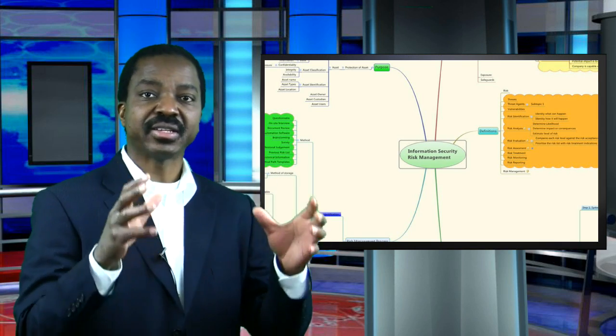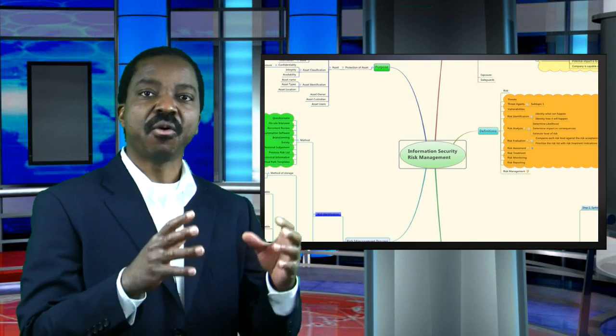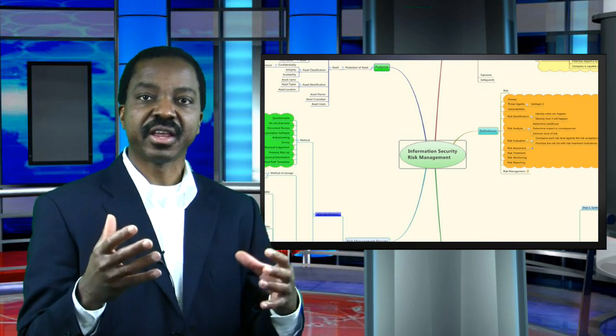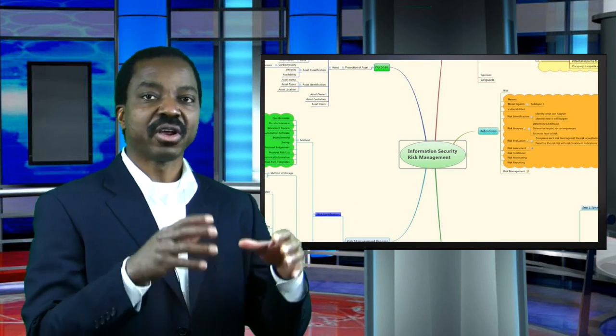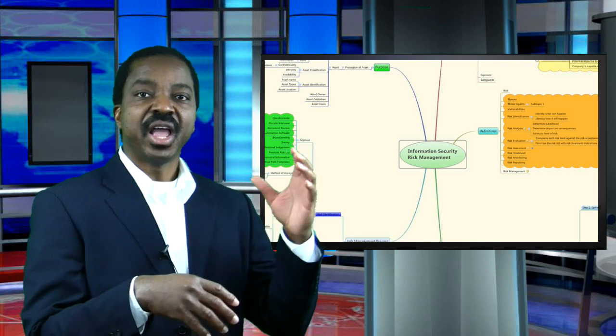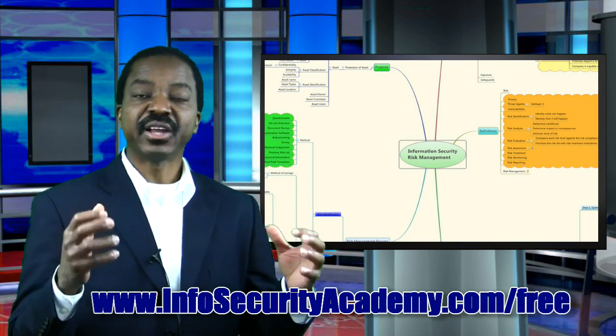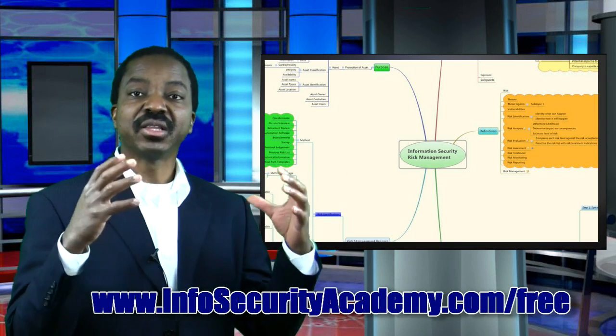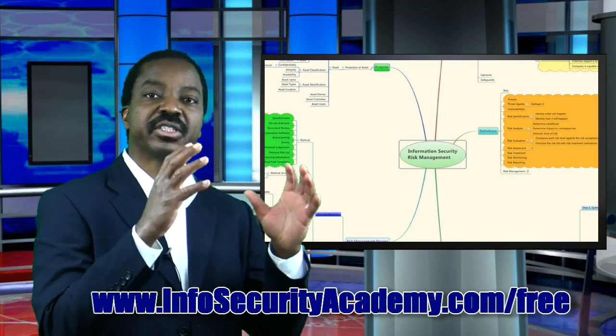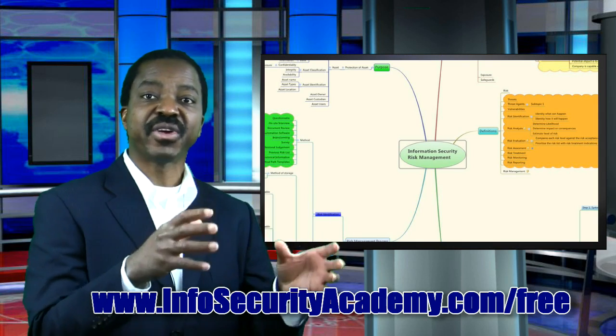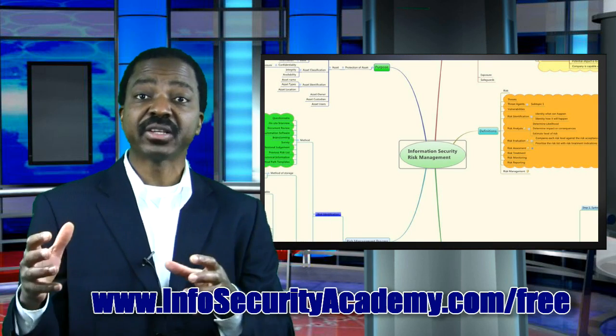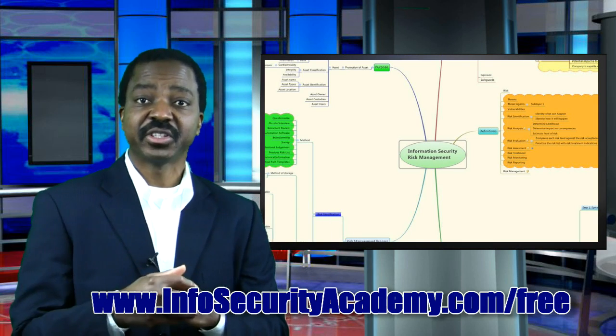What I would recommend is this: for every domain, create a mind map. So while you are studying, create a mind map for cryptography, create a mind map for introduction to information security, and so on. That way when you are done, you will have a series of mind maps for these different domains or main topics of the CSSP certification.